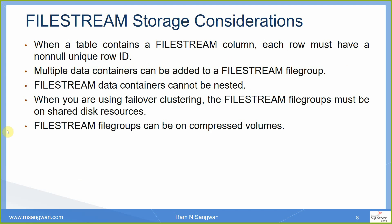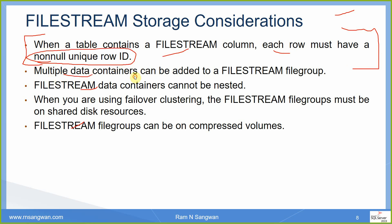FileStream data must be stored in a FileStream file group. A FileStream file group is a special file group that contains file system directories instead of the files themselves. These directories are called data containers — the interface between the database engine storage and the file system storage. When a table contains a FileStream column, each row must have a non-null unique row ID. Multiple data containers can be added to a FileStream group. The containers cannot be nested. When using failover clustering, the FileStream file group must be on shared disk resources.